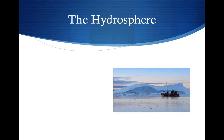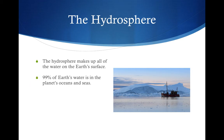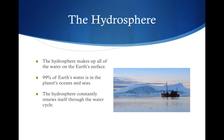The hydrosphere makes up all of the water on the Earth's surface. 99% of the Earth's water is in the planet's oceans and seas. The hydrosphere constantly renews itself through the water cycle, and this involves a process of evaporation, condensation, and precipitation.